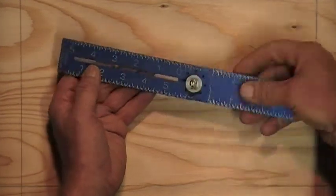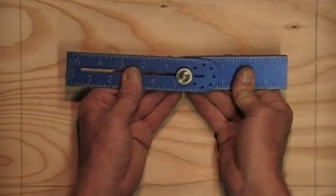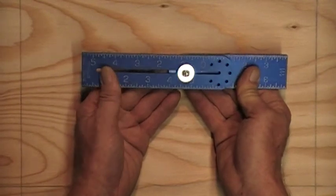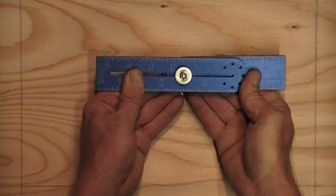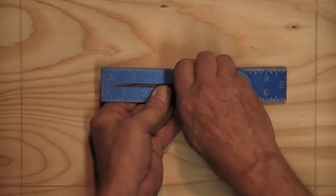I turn the blade like this and using the lower scale line up the four with the center of the screw like that and snug up the thumb nut.